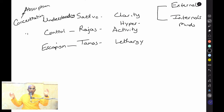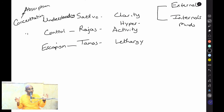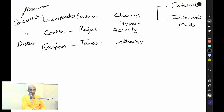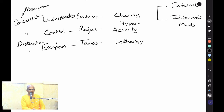Materialistic people can work very hard — forgetting food and sleep for hours to meet a project deadline. Rajo Guna can also produce absorption, but for the purpose of enjoyment. Tamo Guna is often associated with passive attention. Generally we consider attention to be good, and people watching a movie are fully attentive. The whole movie environment is arranged for maximum attention.